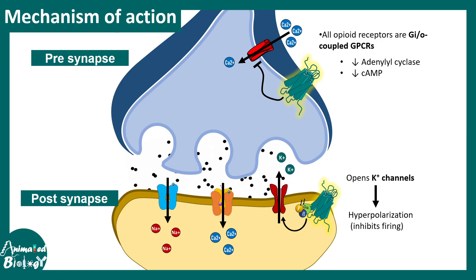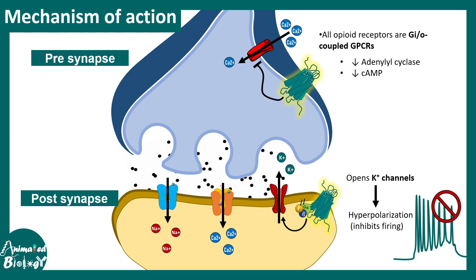An action potential is fired when there is a substantial amount of positive charge flowing in — sodium, calcium, etc. — through glutamatergic receptors. Imagine a bucket being filled by a tap but with holes in it. These potassium channels are like those holes, pumping cations outside the cell and making the membrane more negative instead of positive, making it difficult to reach the action potential threshold.